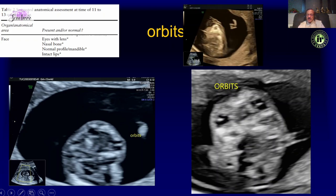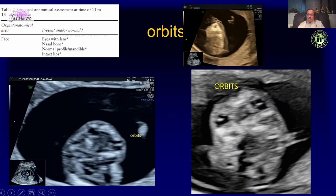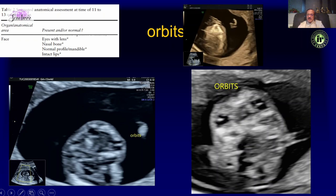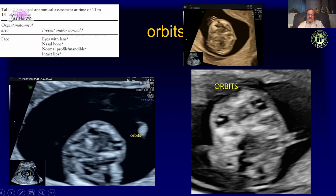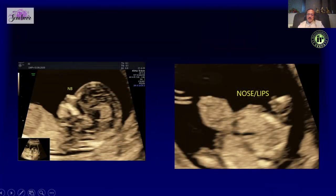Here is a 13-week fetus where you can see both the eyeballs as well as the lens in the first trimester scan. We can also look at the lips and try to get a nose-lip view, though this can be difficult and picking up cleft lips is very challenging at the NT scan.